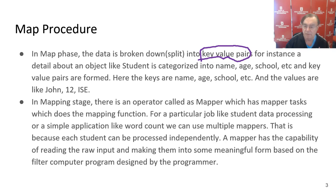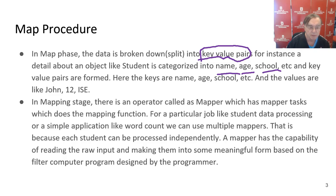We have lots of examples. Databases are full of properties, which are the keys: name, age, school. And you can get key values — the key is name and the value is John, and so on. Age is 12, and school is — well, we don't have too many 12-year-olds in ISC, but maybe we will.